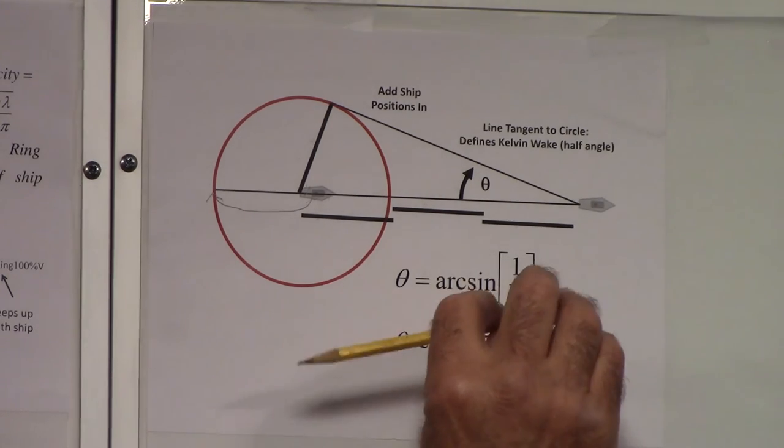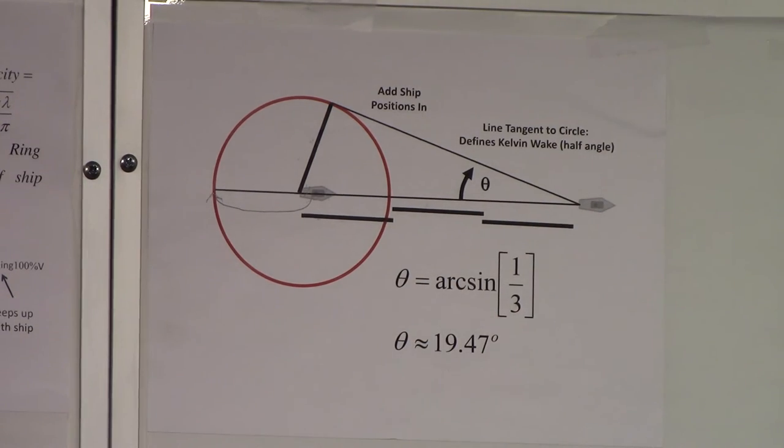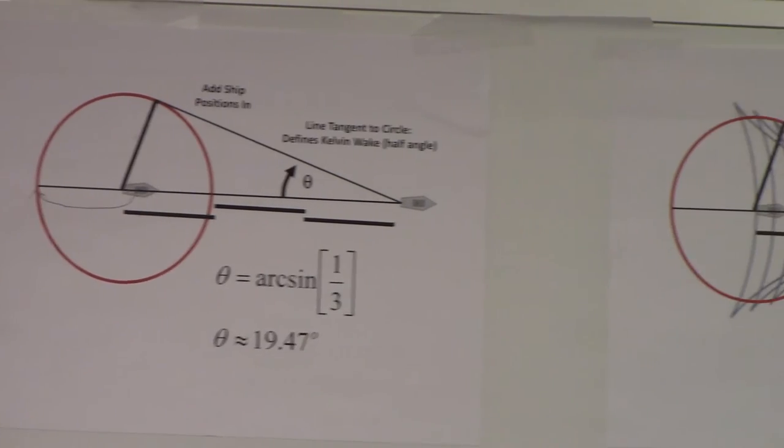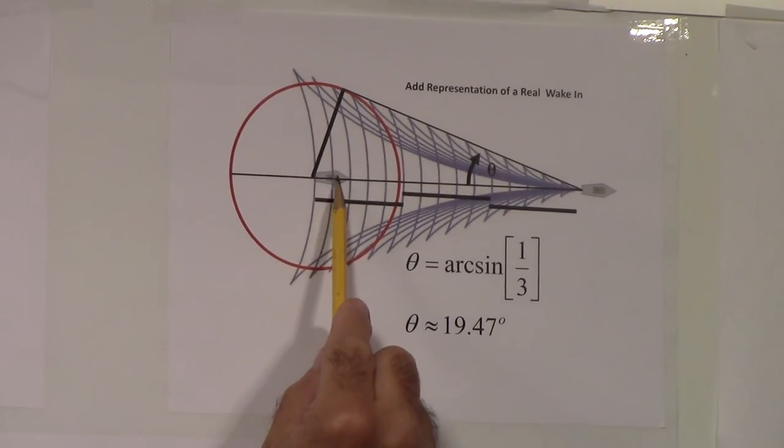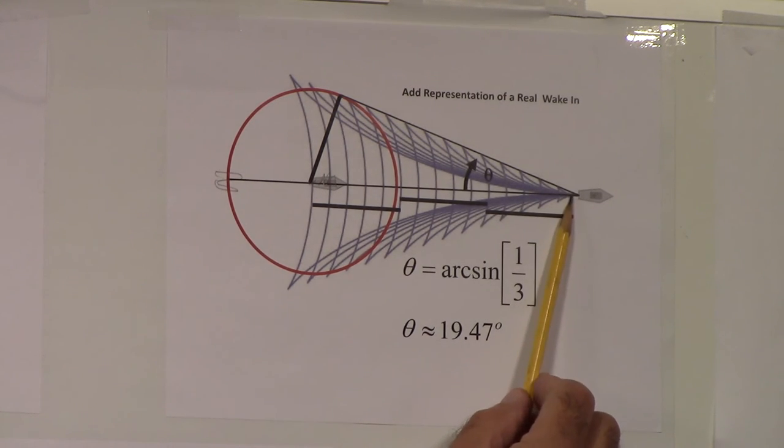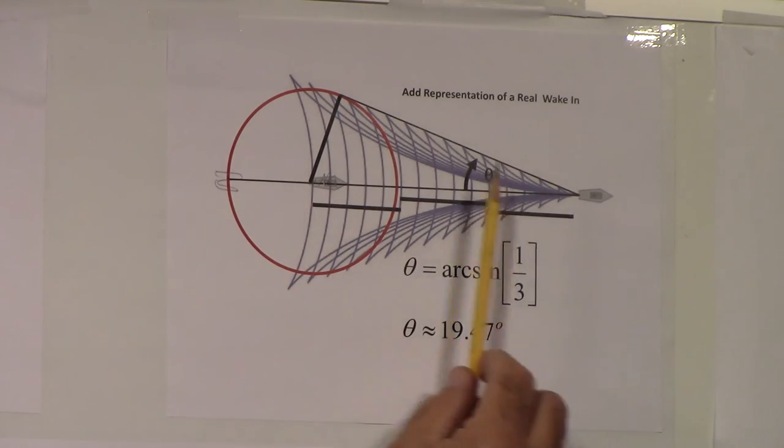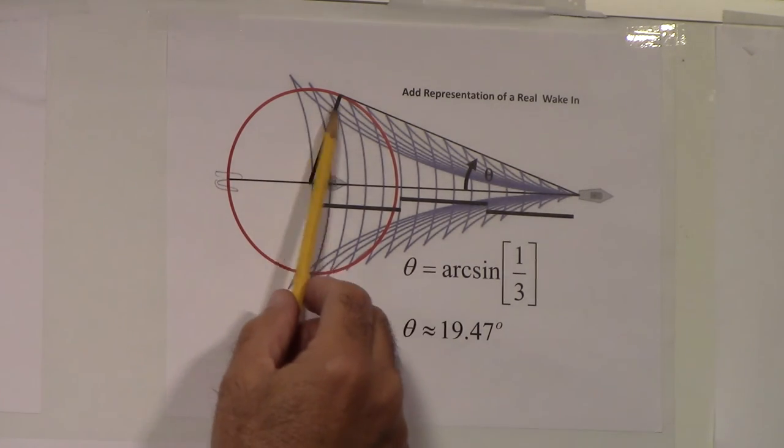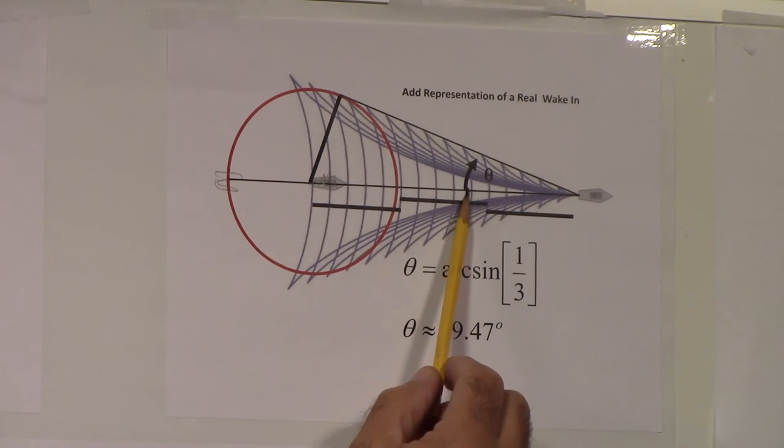Of course, the full angle of the wake would be twice that value. Putting it all together here now, again, this ship is in the wrong spot here, it should be back here. We've put in a true mathematical representation of a Kelvin wake attached to the ship at the now position. We're showing that that wake is, in fact, bounded by that line. And that line has this angle theta, which we already went over. So that is the deep water case.